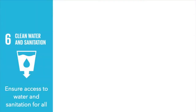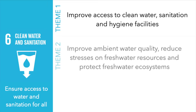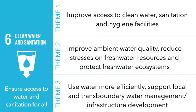That brings me to SDG 6 — clean water and sanitation — which aims to ensure access to water and sanitation for all. SDG 6 has 11 global indicators that are tracked, but I've distilled them down into three main themes. The first is improving access to clean water, sanitation, and hygiene facilities, where I'll spend the bulk of my time today. The second is improving ambient water quality, reducing stresses on freshwater resources, and protecting freshwater ecosystems. The third relates to using water more efficiently and supporting local and transboundary water management and infrastructure development.